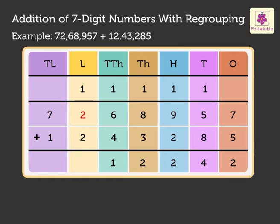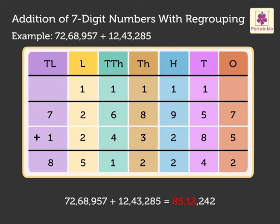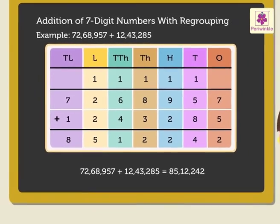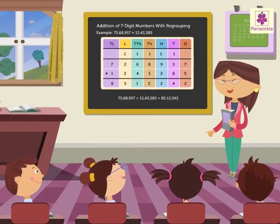Next, 1 plus 2 plus 2 equals 5 in the lakhs column. Finally, 7 plus 1 gives 8 in the ten-lakhs column. Hence, the sum of 72,68,957 and 12,43,285 is 85,12,242. It was so easy to add 6- and 7-digit numbers with regrouping.